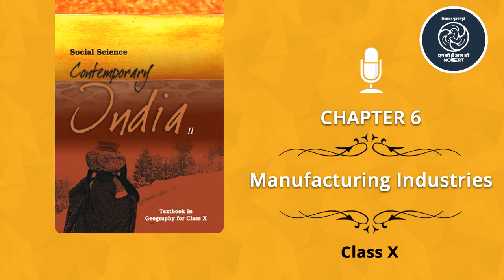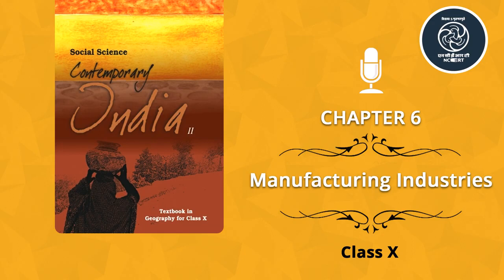First, agro-based industries: cotton, woolen, jute, silk textile, rubber and sugar, tea, coffee, edible oil. Second, mineral-based industries: iron and steel, cement, aluminium, machine tools and petrochemicals. According to their main role, industries can be divided into two categories. First, basic or key industries which supply their products or raw materials to manufacture other goods — for example, iron and steel and copper smelting, aluminium smelting. Second, consumer industries that produce goods for direct use by consumers — sugar, toothpaste, paper, sewing machines, fans etc. On the basis of capital investment, we have small scale industry.